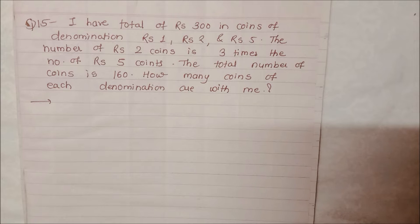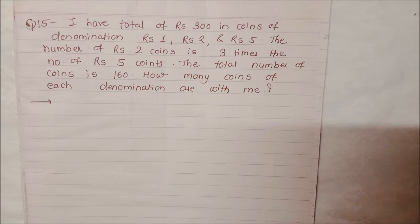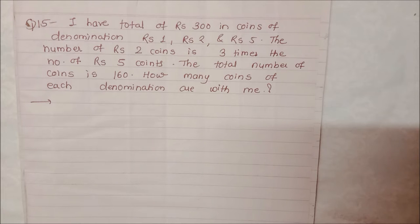Hello friends, welcome back to your channel Beginners Point. I am Shruti with you and we are taking Class 8 Maths Exercise 2.2 Question Number 15. We have to change the numbers, so let's see how to do this. I have a total of rupees 300 in coins, and if we add the total of these coins, how much is it? 300. And how are the denominations — how are the coins that make up 300 rupees?